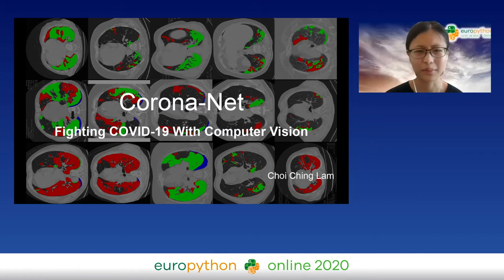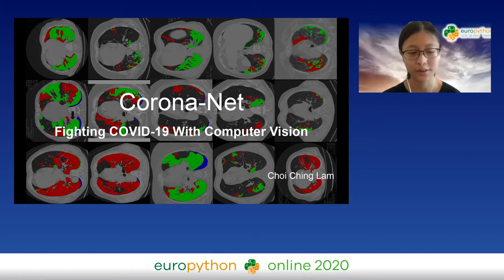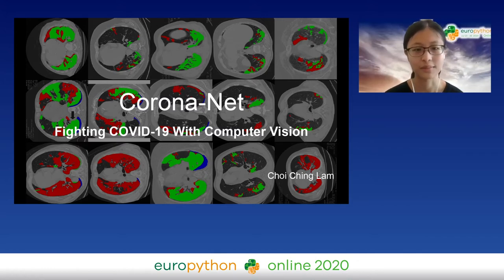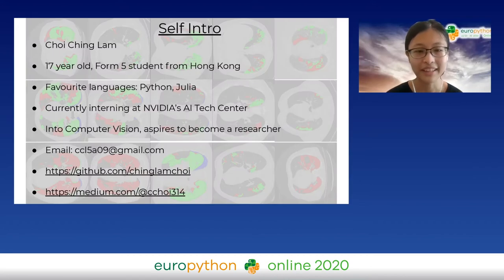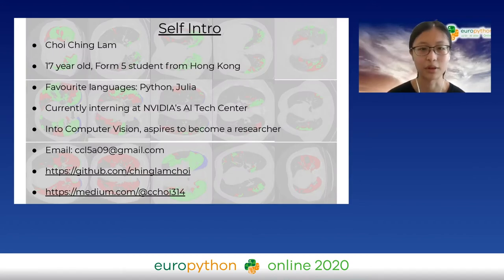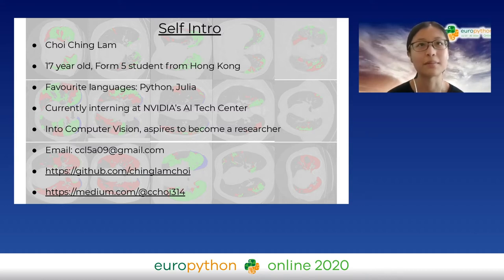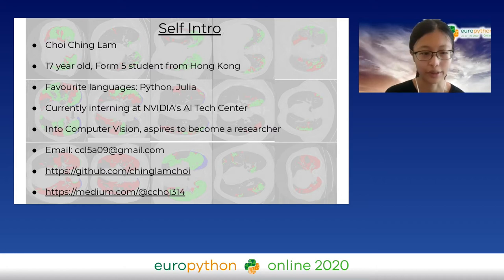Before we begin, a little self-introduction. I am a 17-year-old student from Hong Kong. I'm really interested in computer vision, specifically generative models, as well as scientific computing, especially modeling partial differential equations with neural networks.